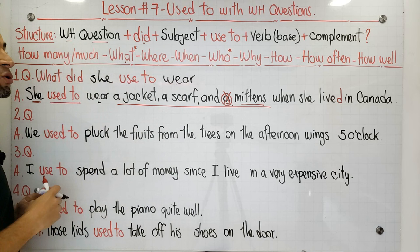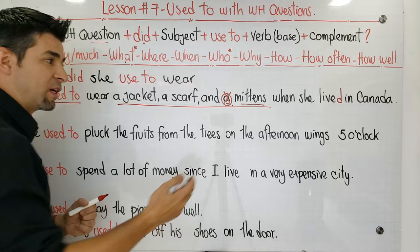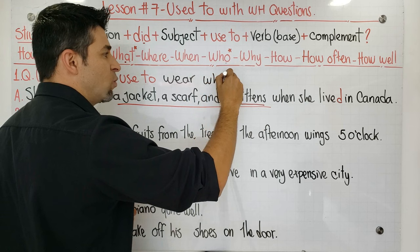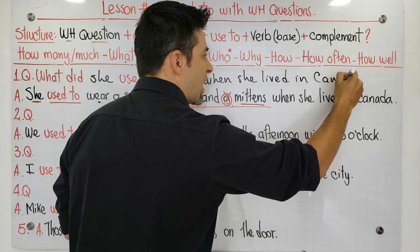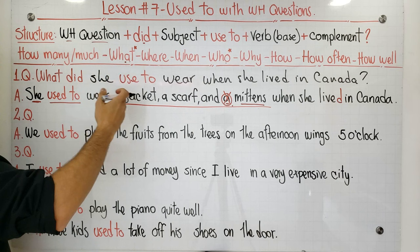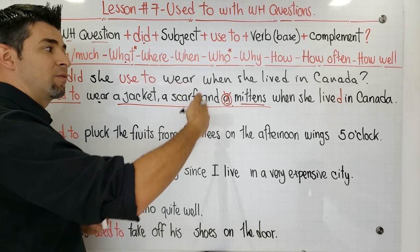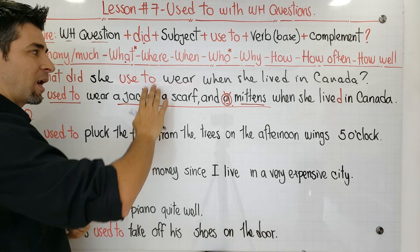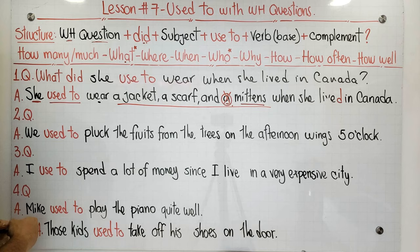That's the question we can use to get this answer: What did she used to wear when she lived in Canada? The answer is: She used to wear a jacket, a scarf, and mittens when she lived in Canada. Okay, guys, let's continue with number two.